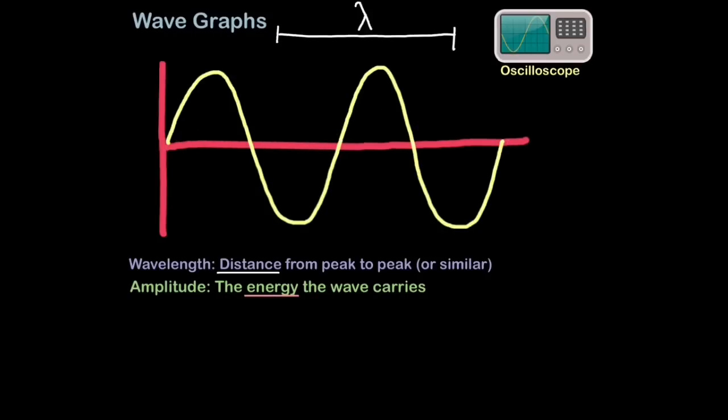Next up is amplitude. Amplitude is the amount of energy the wave carries. So in sound, a high amplitude would be perceived as loud sound. And in light, a high amplitude would be a bright light.